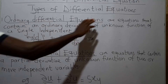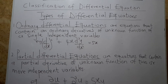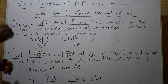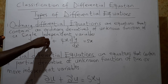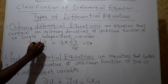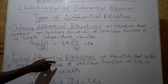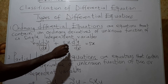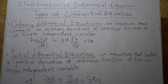Ordinary differential equations are equations that contain an ordinary derivative of a function of just one single independent variable. When differentiation is done with respect to a single independent variable, we call that an ordinary differential equation. For instance: (dy/ds)² + 4s · d²y/ds² = 5s. The dependent variable is y and the only independent variable is x. Since differentiation is done with respect to that single independent variable, this is an ordinary differential equation.